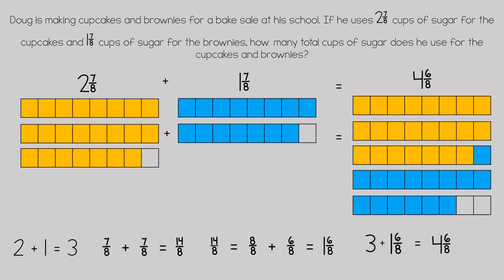That is represented as three plus one and six-eighths equals four and six-eighths. So Doug had to use four and six-eighths cups of sugar for his brownies and his cupcakes.